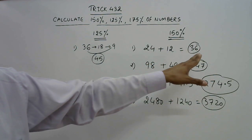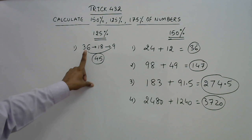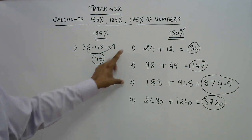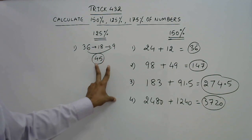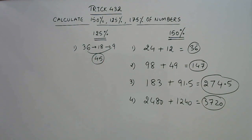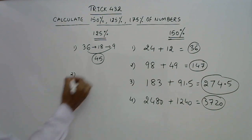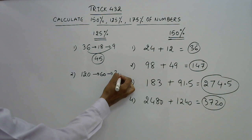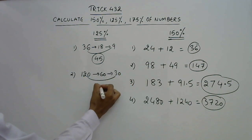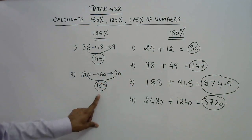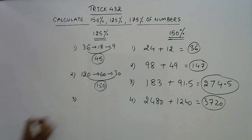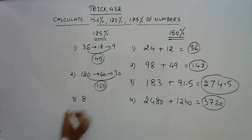So to find 150% you take half and add it to the original, but for 125% you take half of the number and then half again, and add that to the original. For 120: half of 120 is 60, half of 60 is 30. Add 120 and 30 to get 150 — that is 125% of 120.